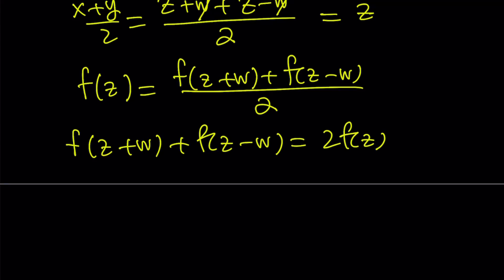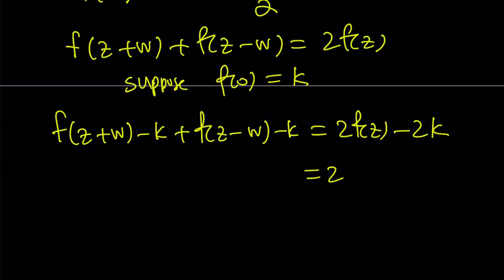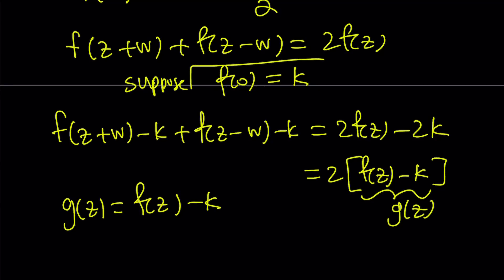That is a very important equation, but I would like to manipulate it more to get what I need. Suppose f(0) equals k. I'm going to subtract k from both sides, but I'm going to subtract it twice. I'm going to write this as f(z+w) - k and then f(z-w) - k. So I subtracted k twice. That means I'm going to subtract 2k from the right hand side and I'm going to be defining a different function now. I'm going to write it as 2(f(z) - k) and I'm going to call that g(z). So g is defined as f(z) - k where k equals f(0). Awesome. That's going to be my new function g.